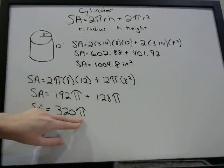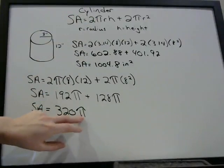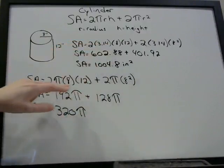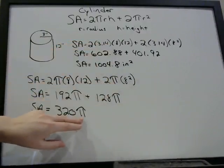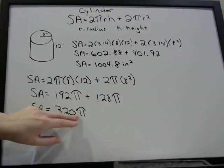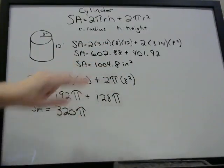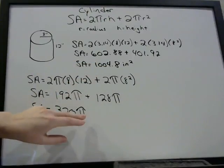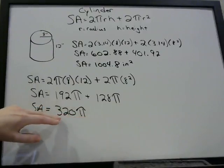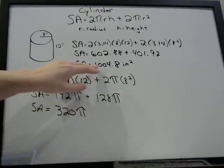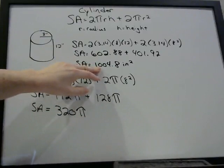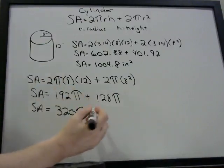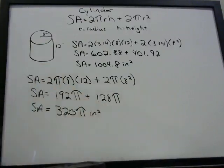If you see answers with the pi symbol, this is how you want to do it — don't put 3.14 in, just leave the pi symbol. To check your answer, 320π means 320 times pi, so plug 320 times 3.14 into your calculator and you'll get 1,004.8 — which matches our earlier answer. And again, this would be inches squared.